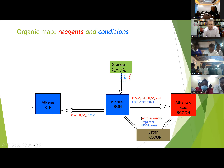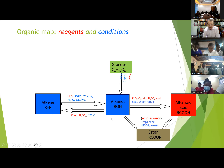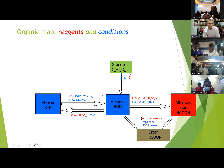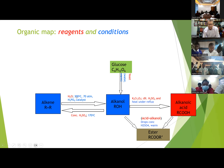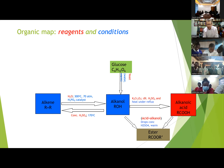Going the other way — from alkene to alkanol — is hydration: the addition of water. Industrially, steam is used under pressure. The conditions are 300°C temperature, 70 atmospheres pressure, and H3PO4 (phosphoric acid) as a catalyst. The high pressure pushes the gaseous alkene and steam together.